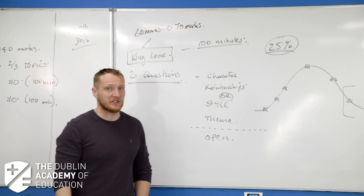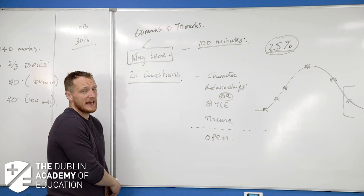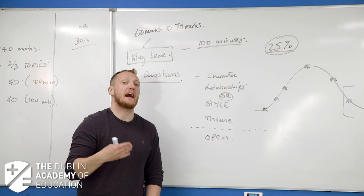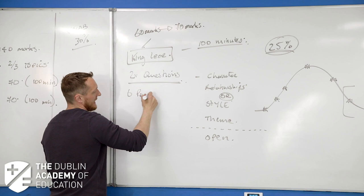This is one of those areas where we do need to improve in terms of our page count. Beforehand, with 60 minutes, we would have had five pages plus a plan. Now though, because we've got 70 marks and 100 minutes, we are trying to get down those six pages.